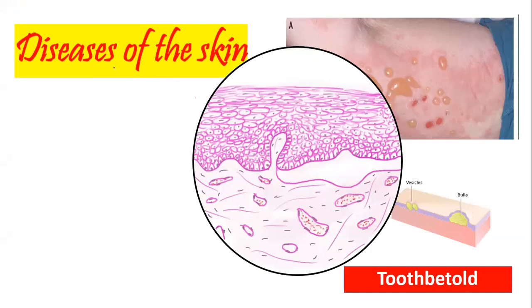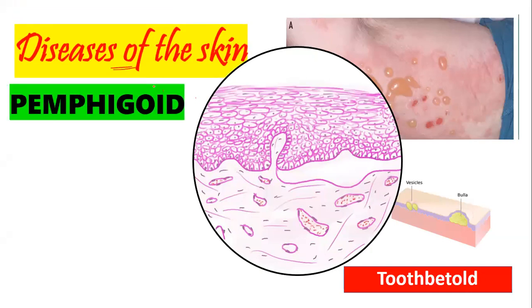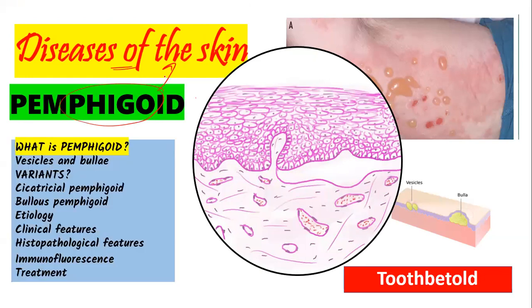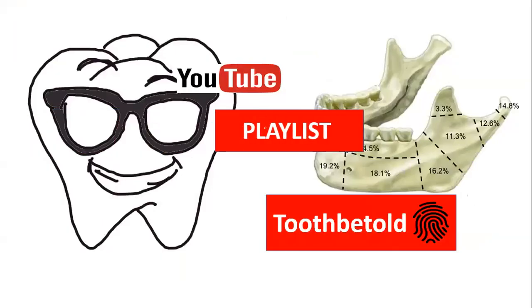Good evening to all of you. This video is on pemphigoid in the diseases of the skin, where we're going to talk about what it is, its variants — cicatricial and bullous pemphigoid — etiology, clinical features, histopathology, immunofluorescence, and treatment. For more such videos, you can check out the channel Truth Be Told.